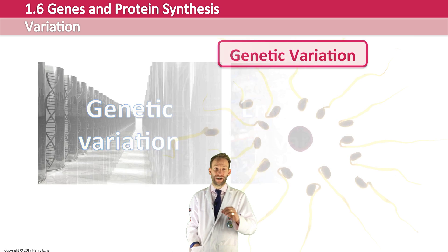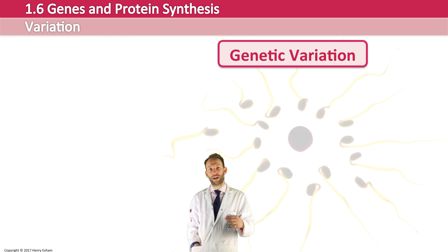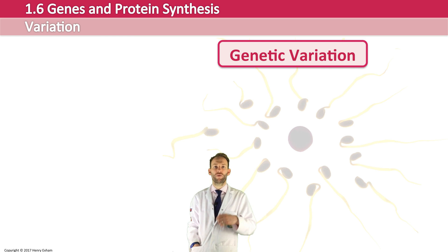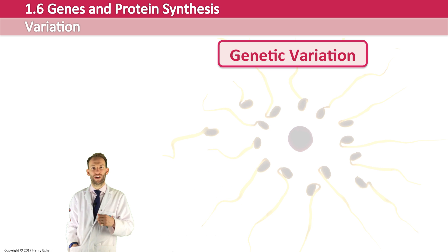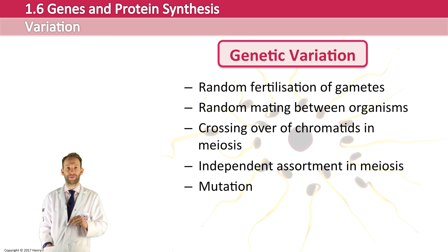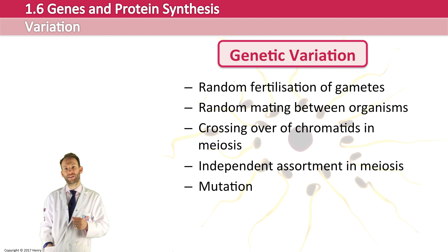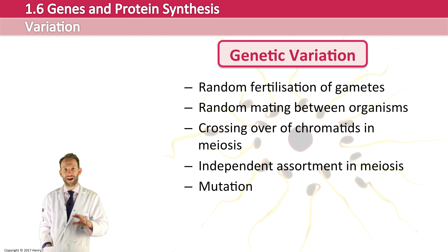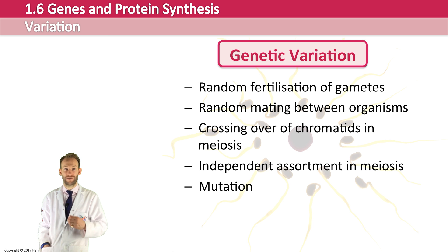Genetic variation can be passed on, but environmental variation cannot. So what kind of things cause genetic variation? The random fertilization of gametes, the random mating between organisms, crossing over of chromatids in meiosis, independent assortment in meiosis, and also mutation. All these things can cause variation in the genes of an organism.